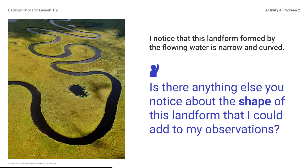Is there anything else you notice about the shape of this landform that you could add to your observations? You would record these observations in the middle column of the table. Share your ideas with others if you can. Notice that in this landform formed by water, there are smaller landforms that branch off from the main channel. Reminder that the images you will observe are aerial images and show large sections of the Earth's surface.